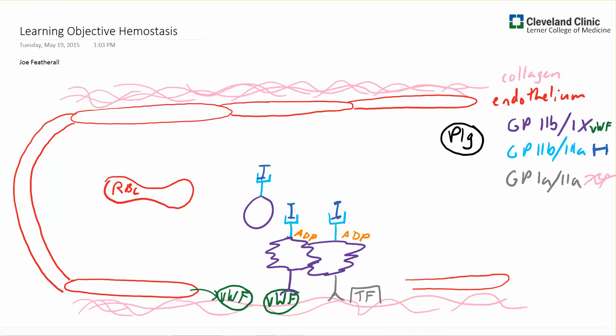The von Willebrand factor that's released can then activate other platelets in the area. And these platelets then continue to propagate this aggregation until we have a large network of platelets aggregated.